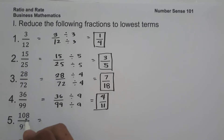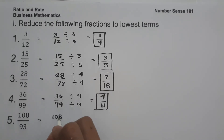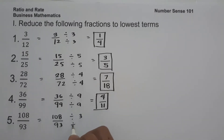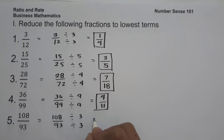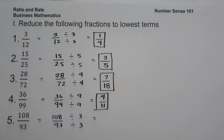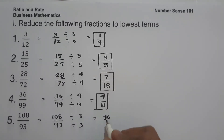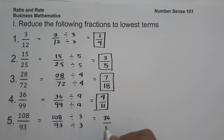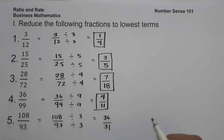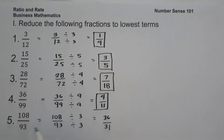On number 5, we have 108 over 93. The GCF of 108 and 93 is 3. Let us divide the numerator and denominator by 3. 108 divided by 3 is 36, and 93 divided by 3 is 31. Therefore 108 over 93 in lowest terms is 36 over 31, and this will be our answer.